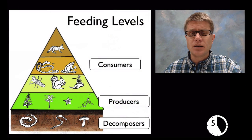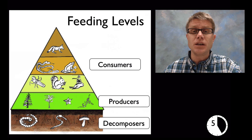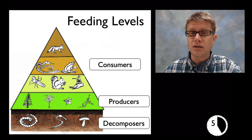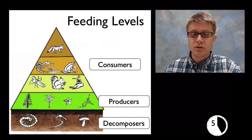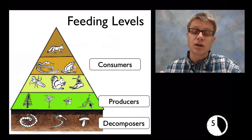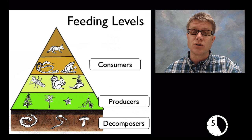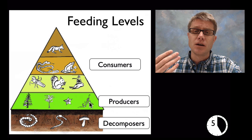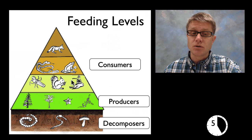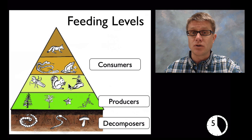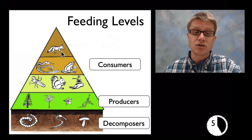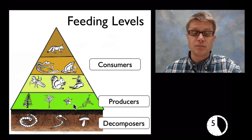As we move up in elementary we should start to talk about levels of feeding and food webs. A producer is an organism that can produce their own food — plants are that, but also phytoplankton, which are really important producers in the oceans. Consumers eat producers or things that eat producers. Moving up, we have primary, secondary, and tertiary consumers, meaning they're eating things that eat plants or eating plants themselves.